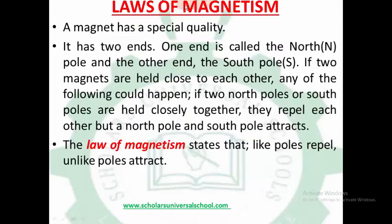Now, laws of magnetism. A magnet has a special quality — it has two ends. One end is called the North Pole and the other end is called the South Pole.